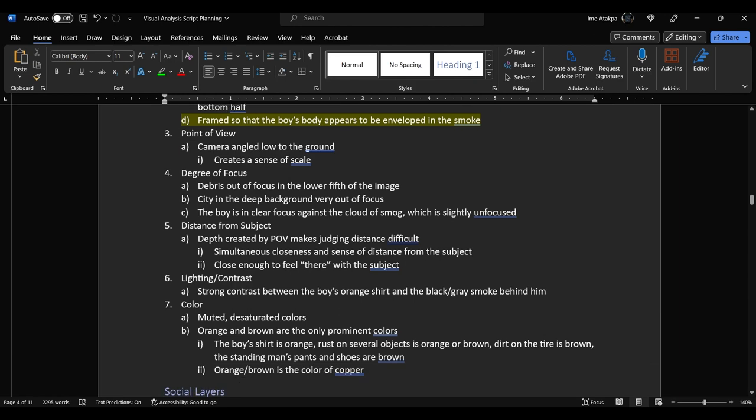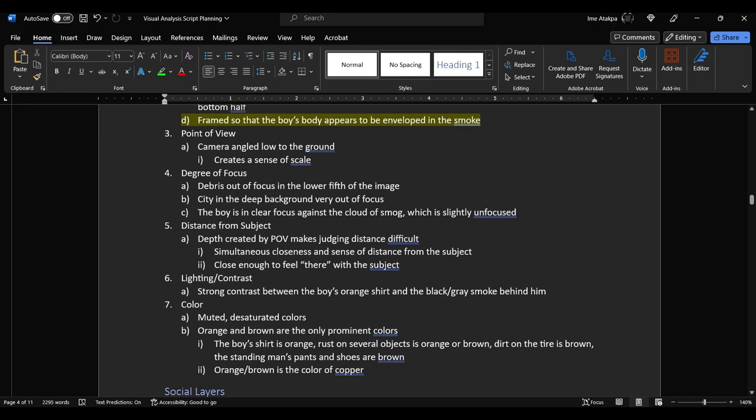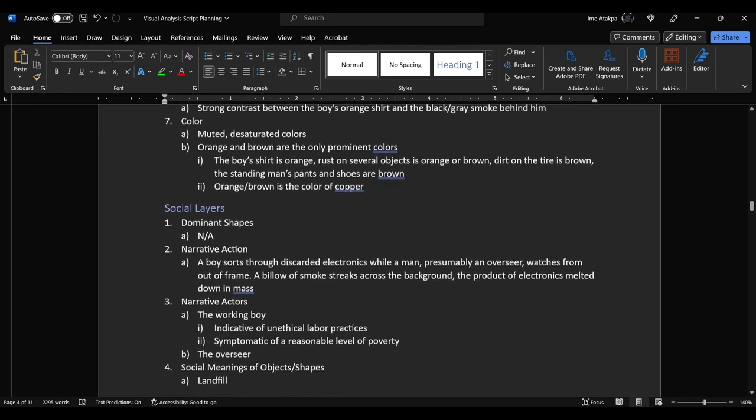So you can see some of those things also appearing in my notes just from my first impressions of that document. So you can create a lot of your notes from that first impression just going through really quickly before giving it another pass and maybe adding some more detailed notes. Again, these notes are not as comprehensive as I might do them otherwise, but they're there. Same thing for social layers. I have all four of my social layers listed out. I didn't find any dominant shapes, so I'm not going to include that. Some notes on the narrative action, the narrative actors, and the social meanings of objects and shapes.